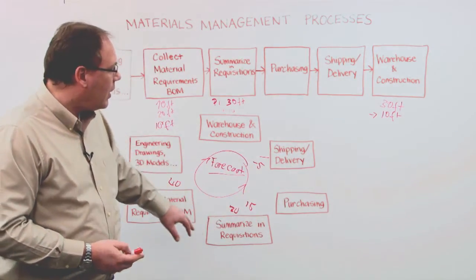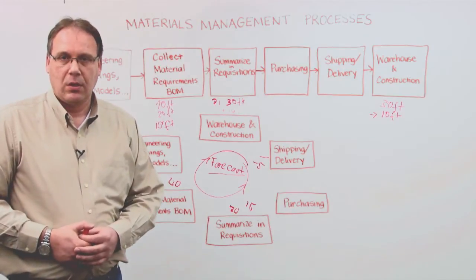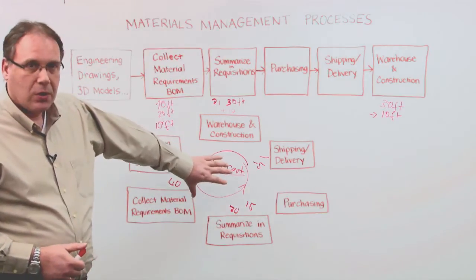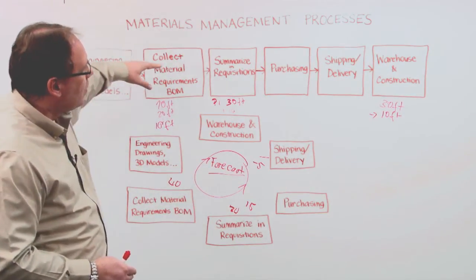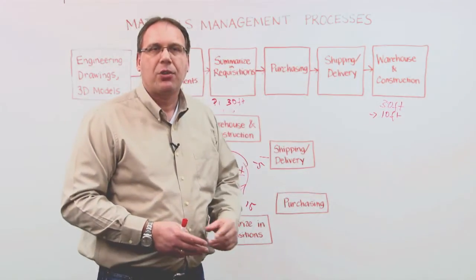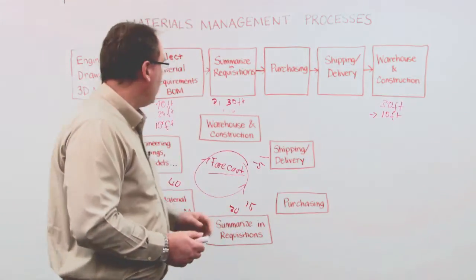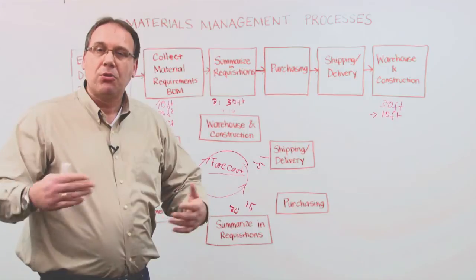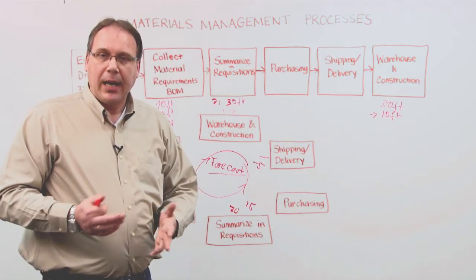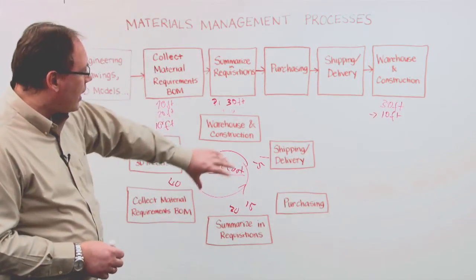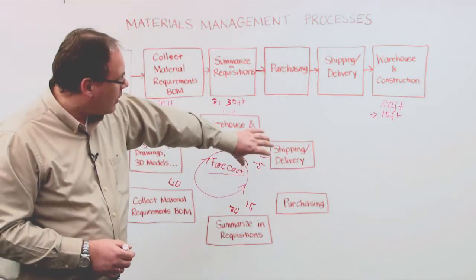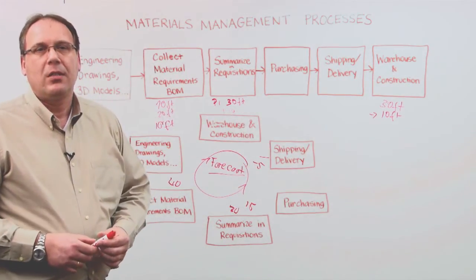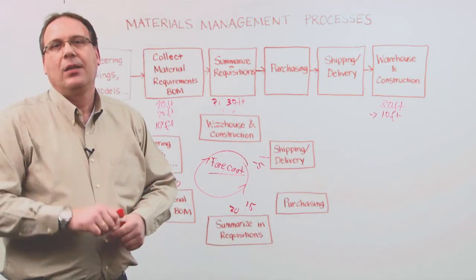So the difference between these two different pictures: this is a normal process we see in the manufacturing industry where you build something, you need something, you use it. In our industry, EPC industry, plant industry, big projects, a lot of change is happening. That's the reason why in our industry it needs to be more a circle where all the processes need to be analyzed and compared all the time.